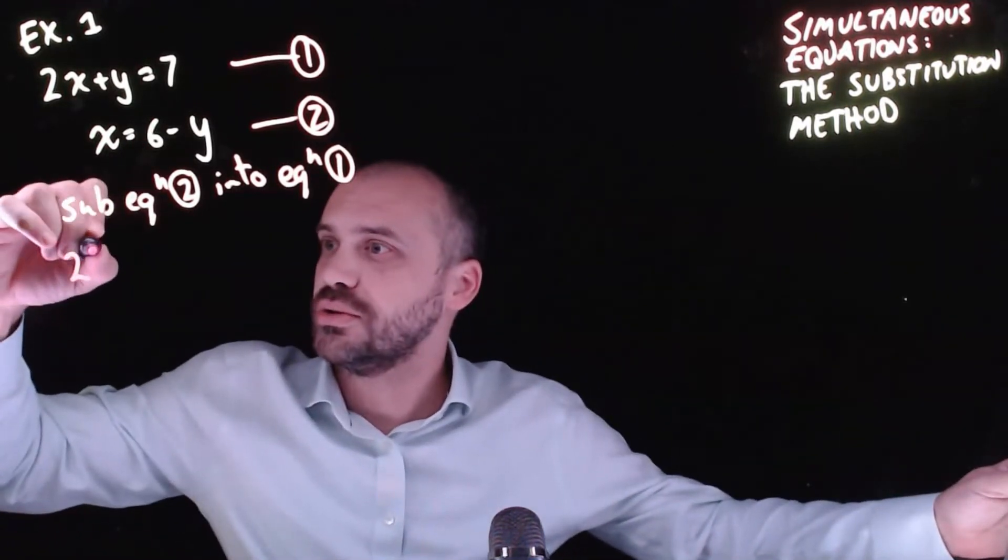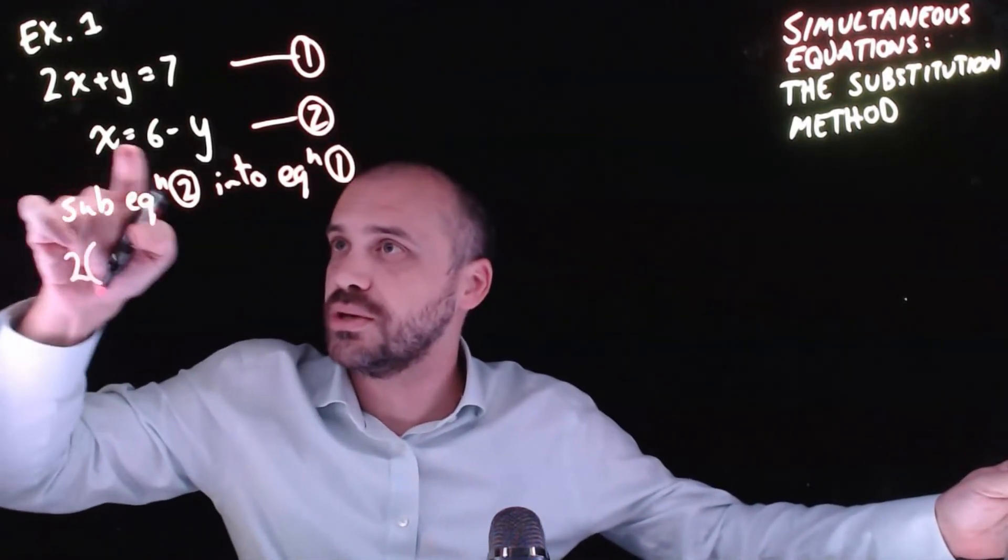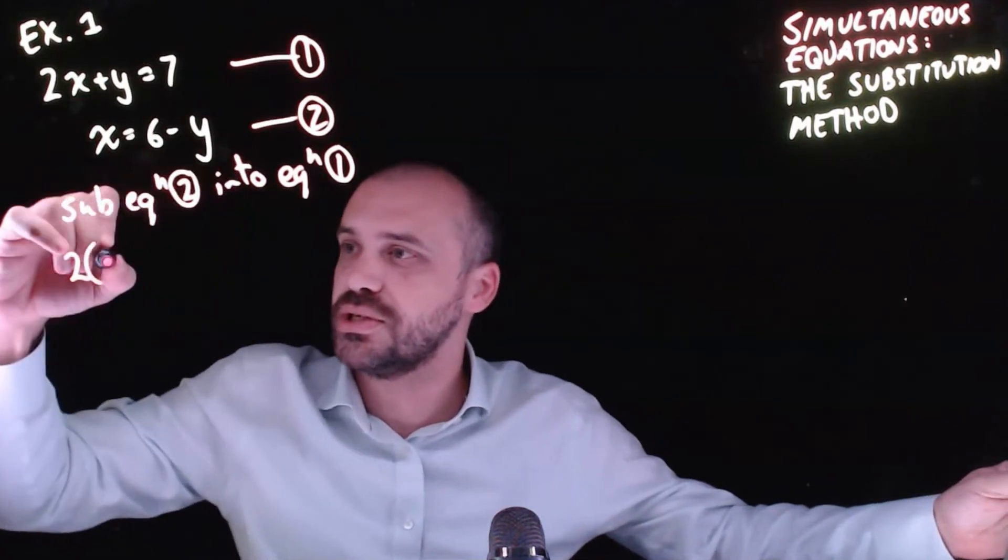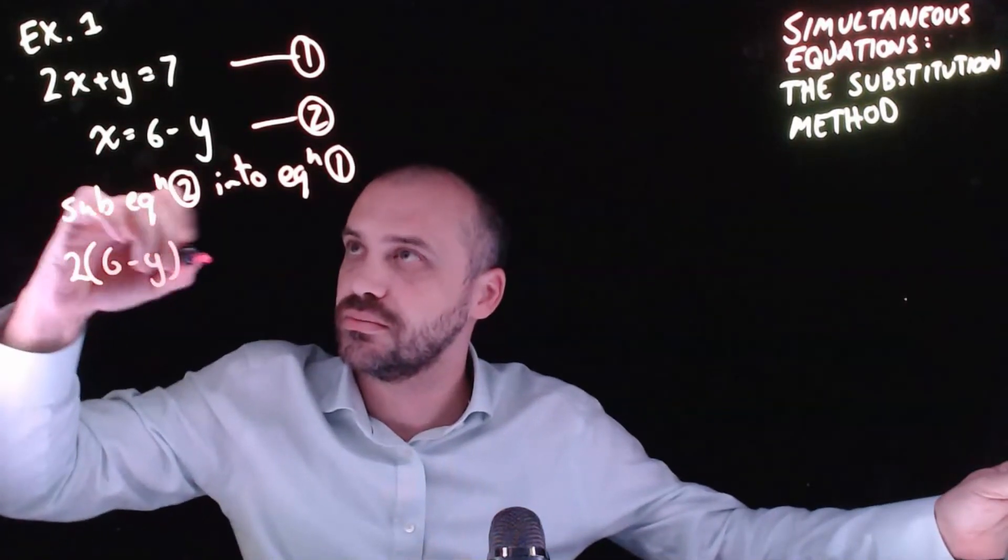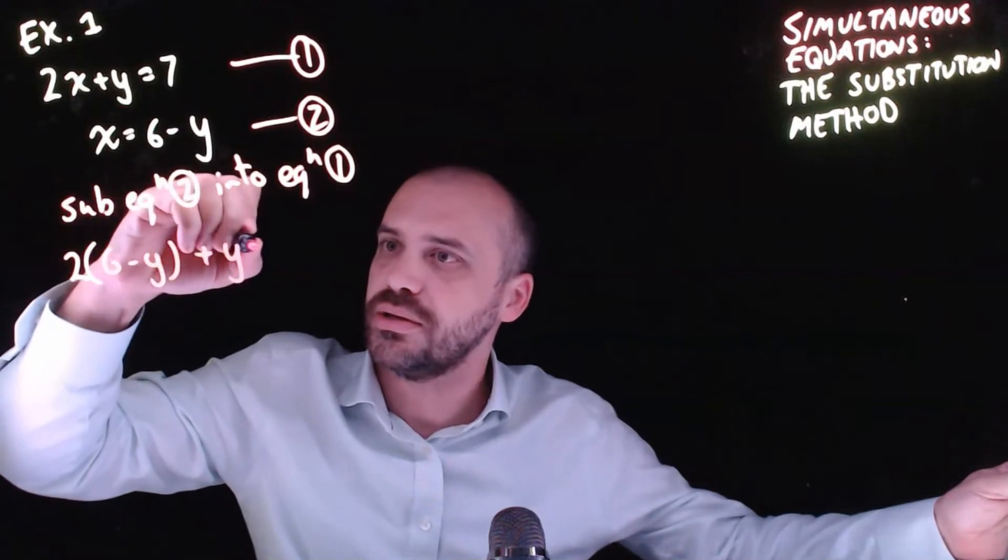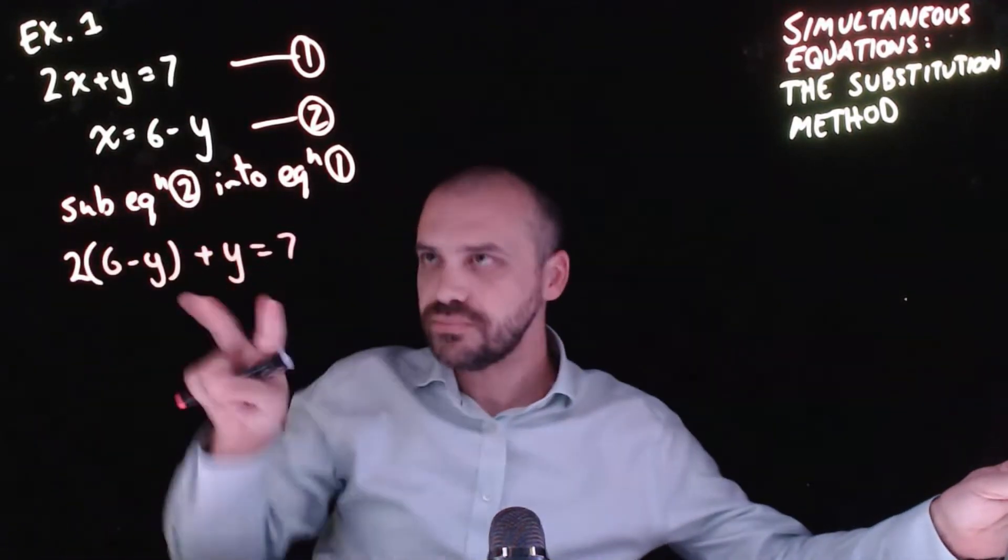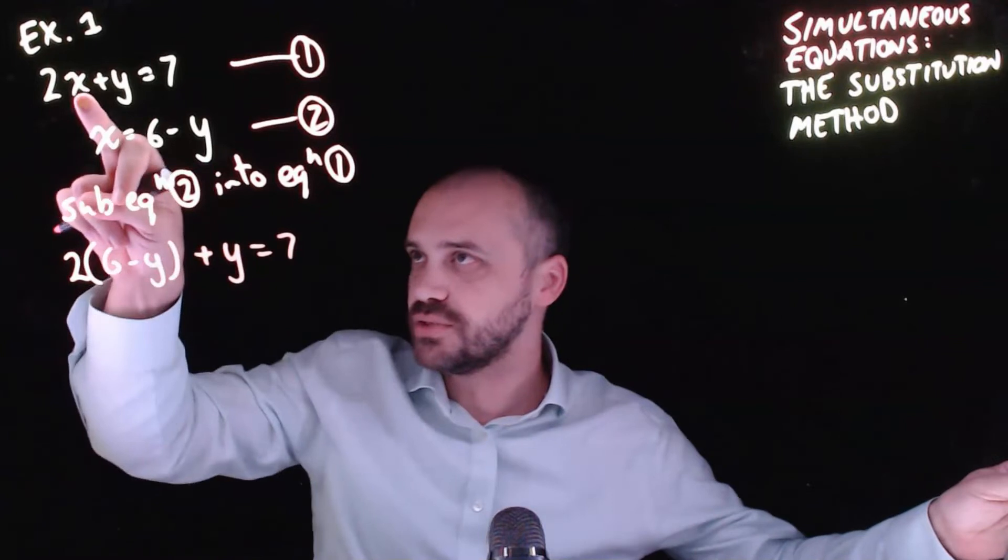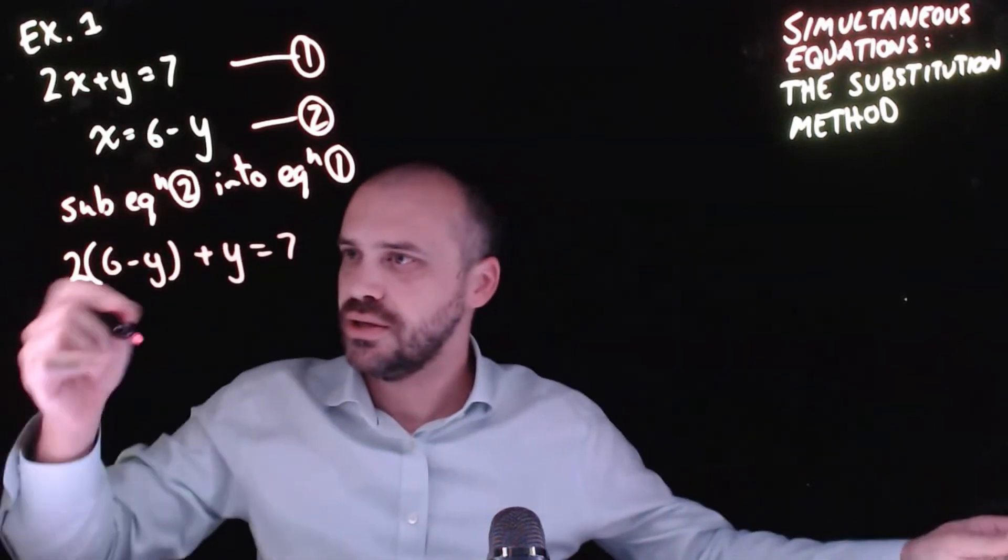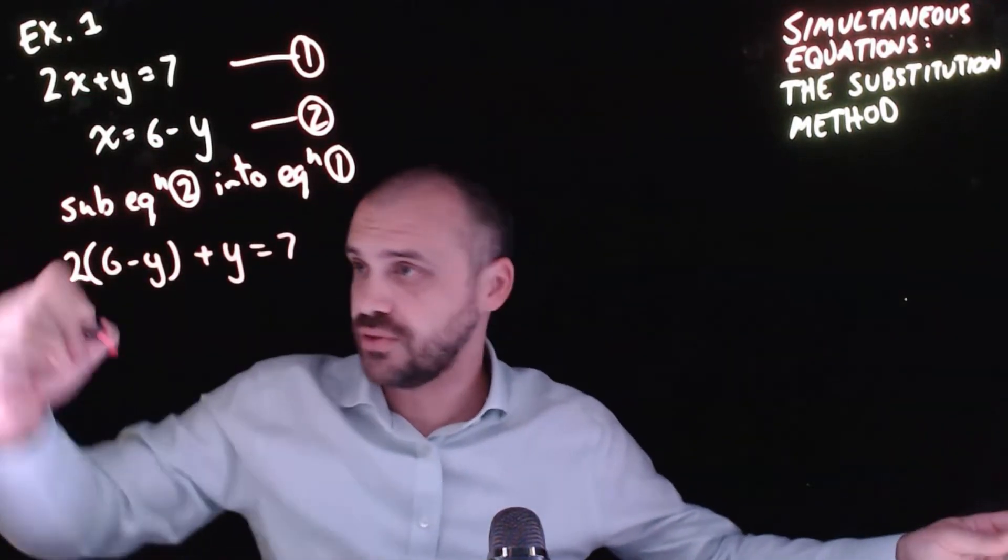So where the x was, we're going to put the thing that x is equal to: 6 - y. So 2(6 - y) + y = 7. I've taken this equation and substituted it in there. Okay, and now I just solve that equation.